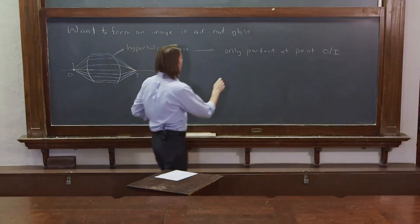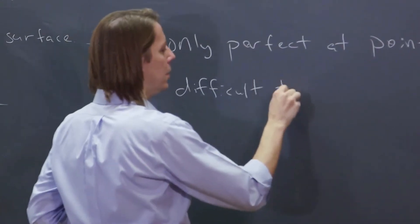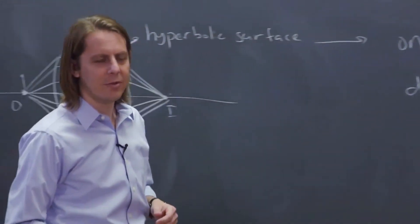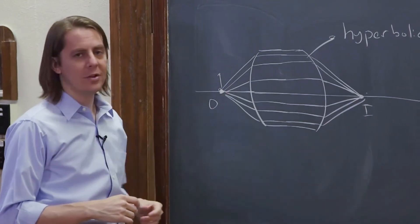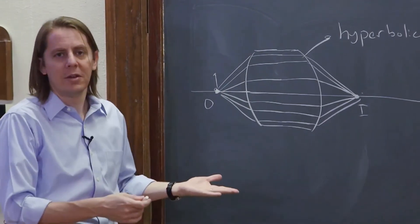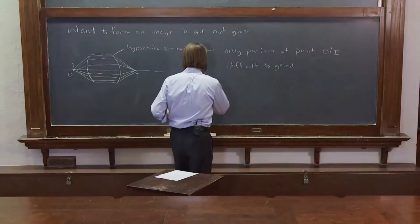And another issue is that it is difficult to grind. I've never had the pleasure of grinding a lens myself, but I'm told it's much easier to grind a spherical surface than to grind a hyperbolic surface. So basically, these are kind of hard to make. It doesn't mean we can't make them. It doesn't mean people don't make them. It doesn't mean people don't use them.